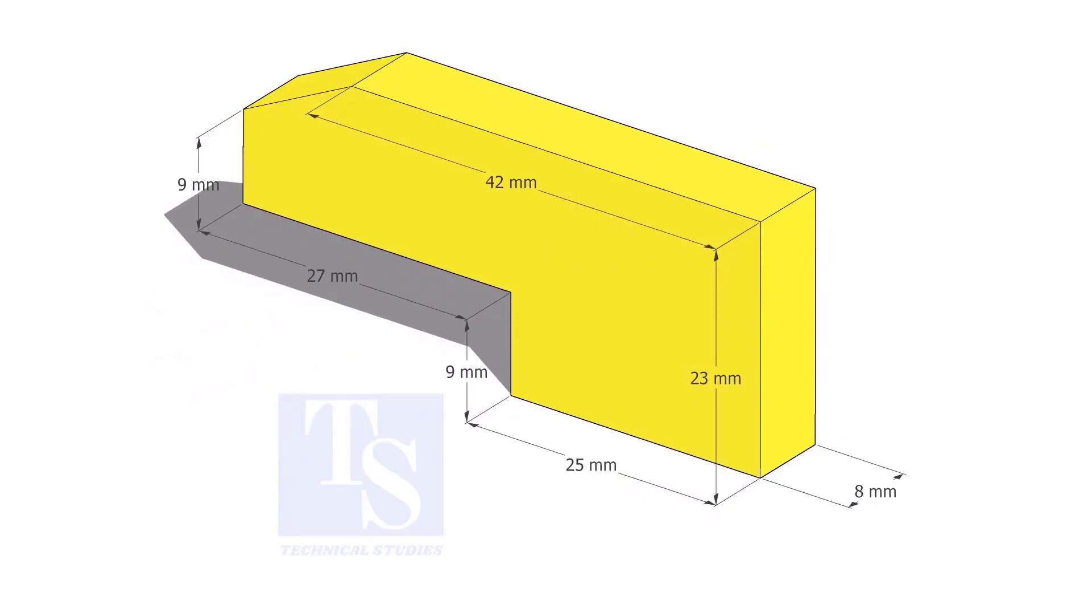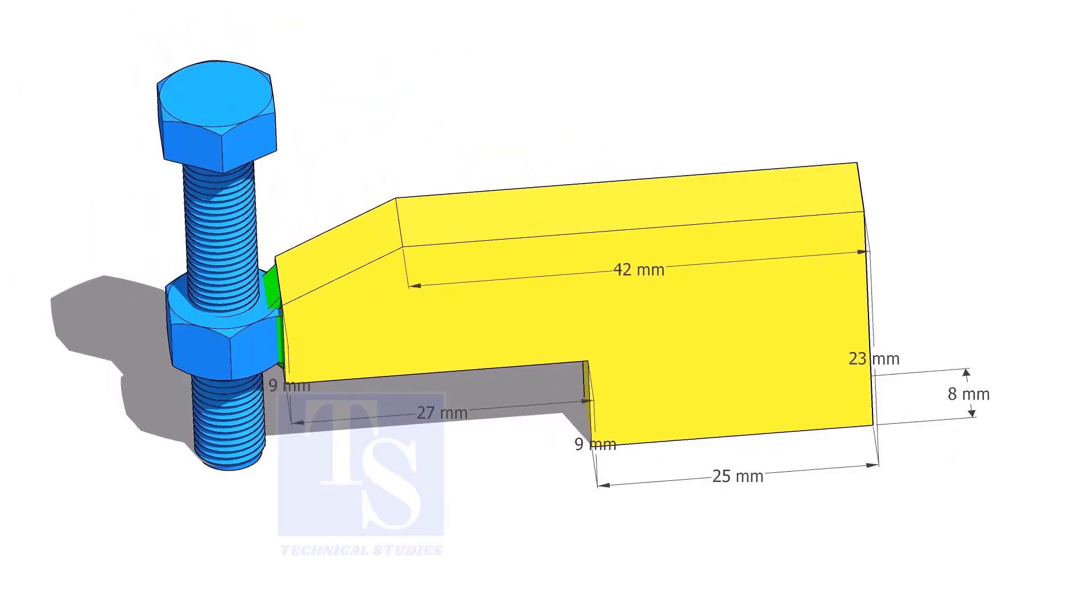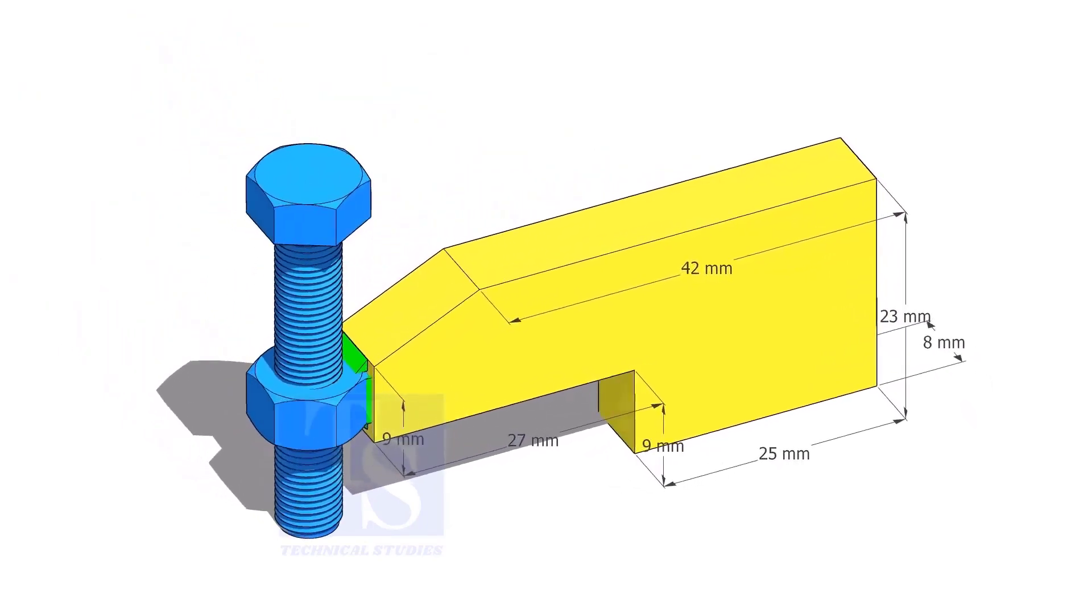Up to 4 inch pipes, you can use 10 mm thick plates. For 6 inch and above pipes, 12 mm to 16 mm thick plates are enough.